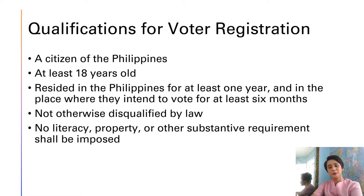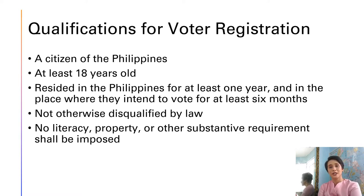For example, convicted criminals lose the right to vote for as long as they are serving their sentences. Also, people who have become citizens of another country will lose their right to vote in their original country. No literacy, property, or other substantive requirement shall be imposed. This ensures that no person will be discriminated upon or disenfranchised — meaning not be able to vote — even if they cannot read or write, have no job or property, or are differently abled. As long as they meet all the other qualifications, the government will ensure they can practice their right to vote.